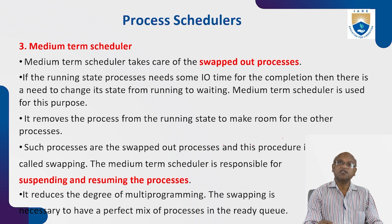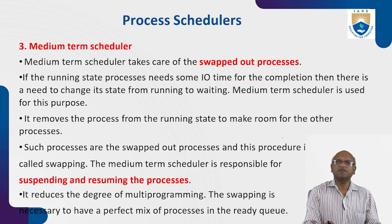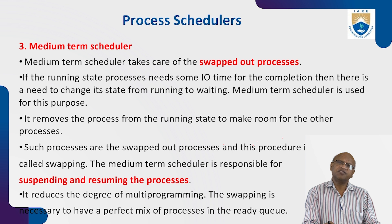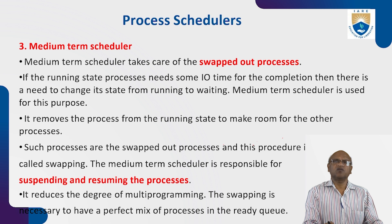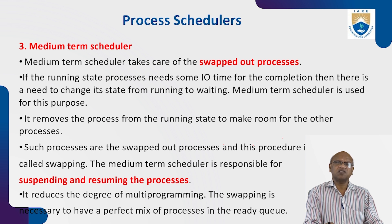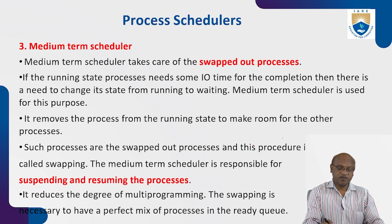The medium-term scheduler handles swapping among CPU, RAM, and waiting state. If the running process needs some I/O time for completion, there is a need to change its state from running to waiting. This is done by the medium-term scheduler — a program in the OS responsible for moving a process from the running state to the waiting state and from the waiting state back to the ready queue. It removes a process from the running state to make room for other processes; this is called swapping. The medium-term scheduler is responsible for suspending and resuming processes.